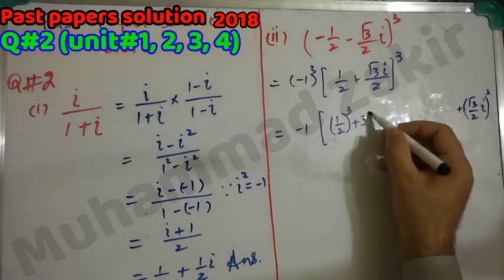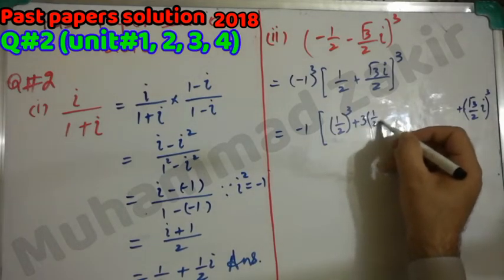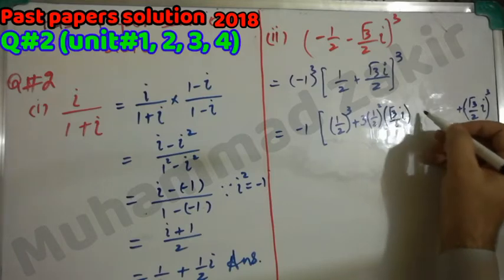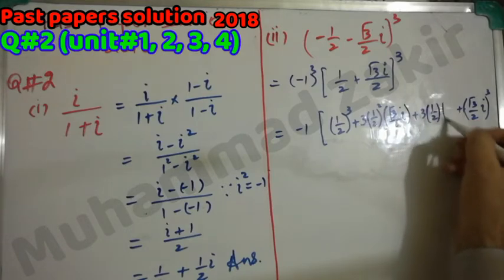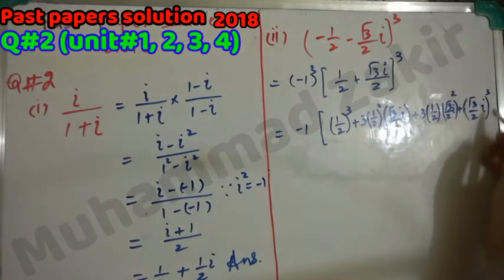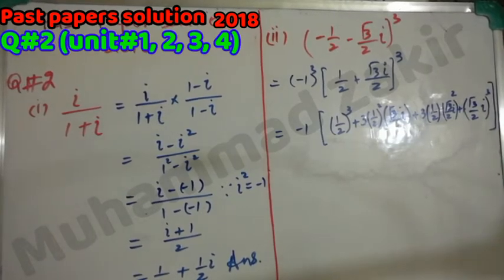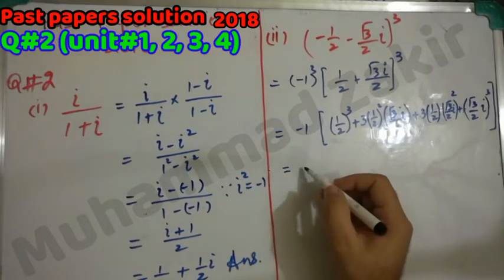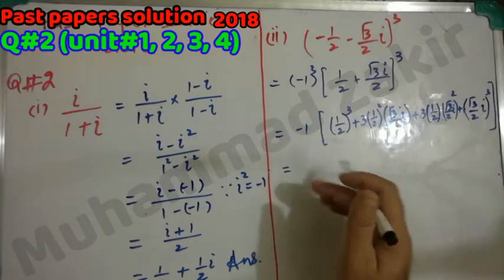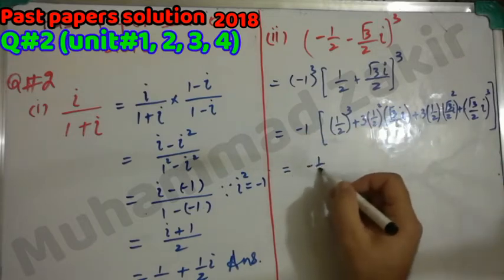Expanding the cube: a³ + b³ + 3a²b + 3ab². All terms inside will be negative due to the minus sign outside. So we get minus 1/8 for the first term.